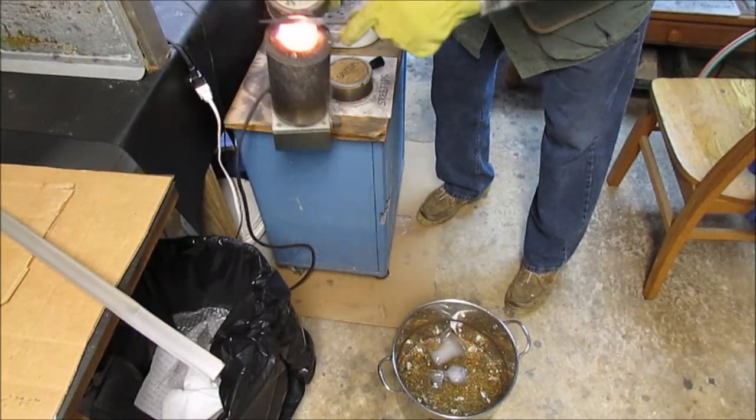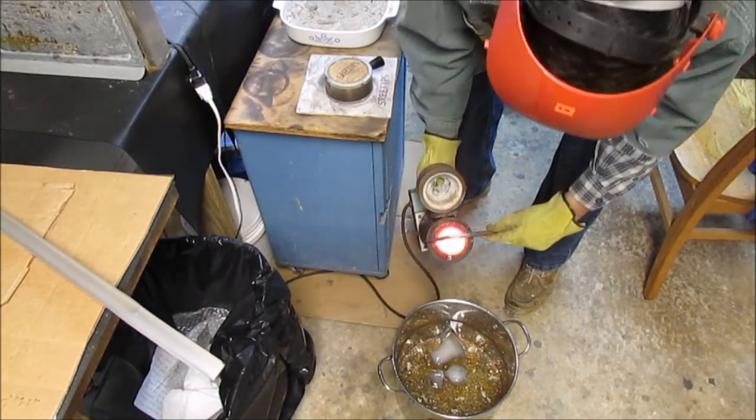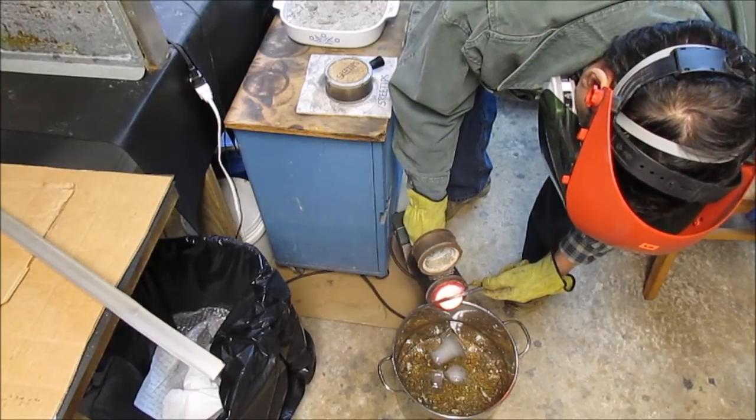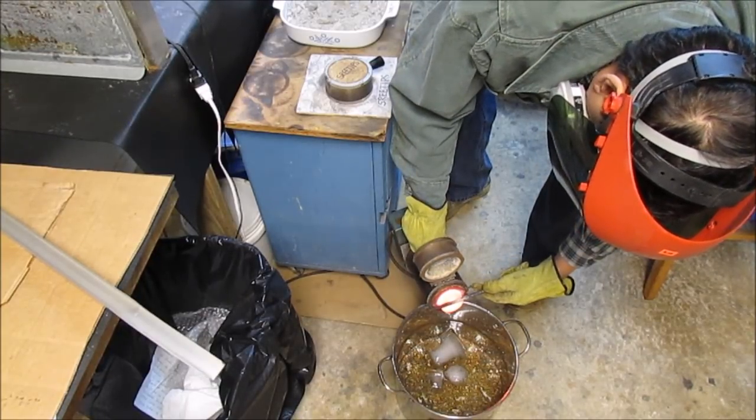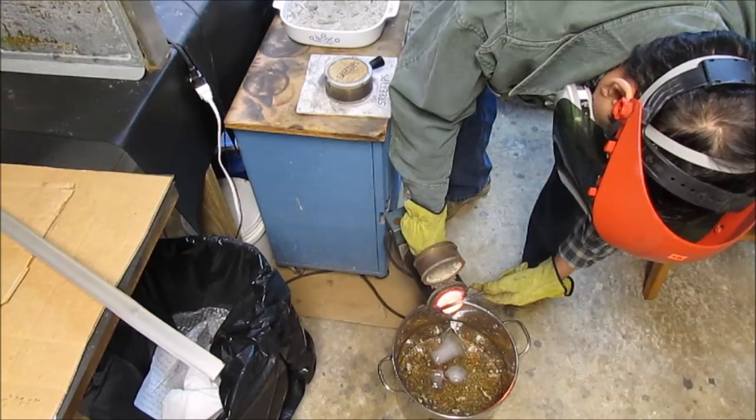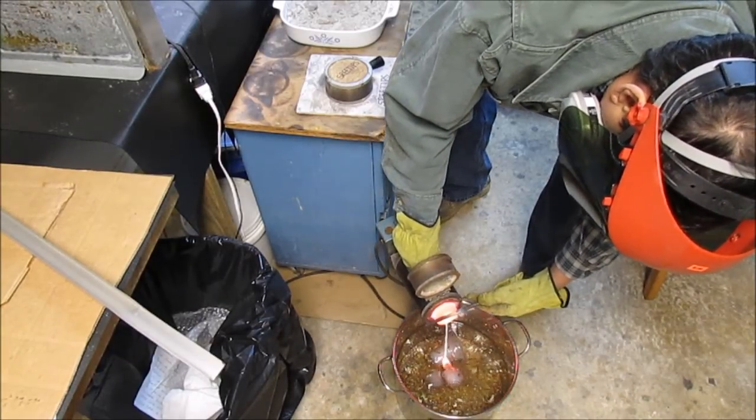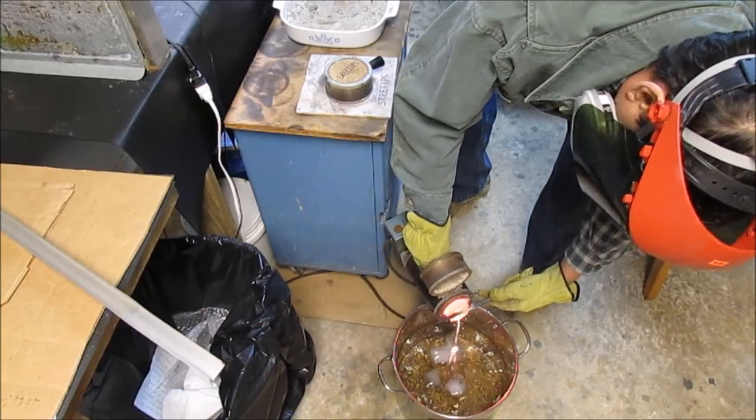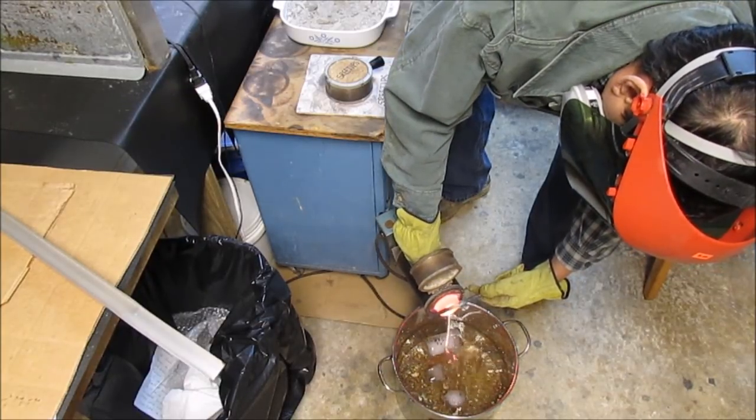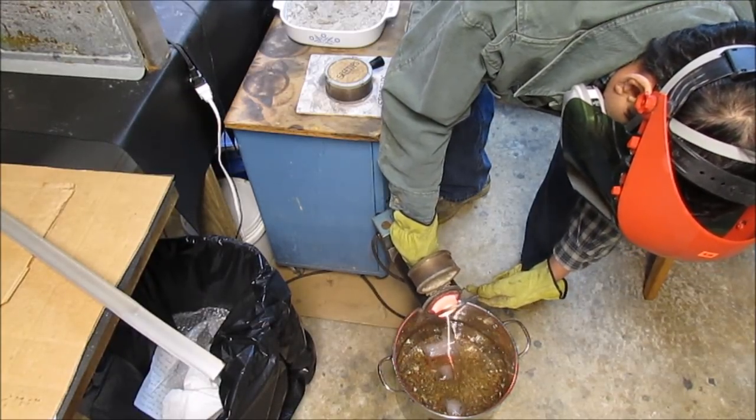I learned this trick from a jeweler: notice how I hold the hot crucible inside the furnace with that graphite rod as I pour. This keeps the heat on the crucible. Pulling that crucible out and pouring the metal would cause that crucible to cool down significantly, and by keeping it in the furnace it keeps it hot and makes things go much quicker.